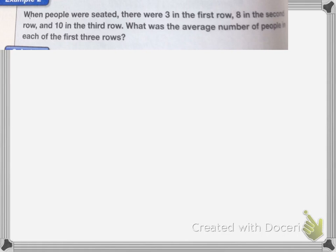Finding the average is also a two-step problem. When the people were seated, there were three in the first row, eight in the second row, and ten in the third row. What was the average number of people in each of the first three rows? To find the average, I first have to add up how many people I had total. Three plus eight plus ten, which is 21 people.